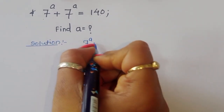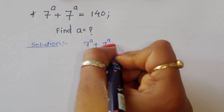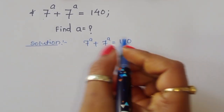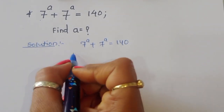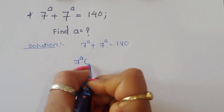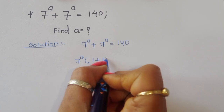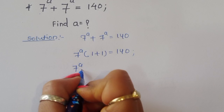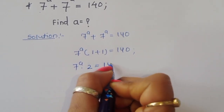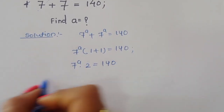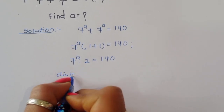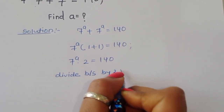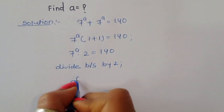7 power a plus 7 power a is equal to 140. If we take 7 power a common, then on the left hand side we get 7 power a times 1 plus 1, which is equal to 140. So 7 power a times 2 is equal to 140.